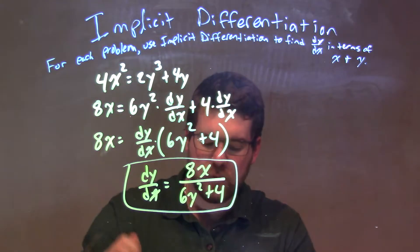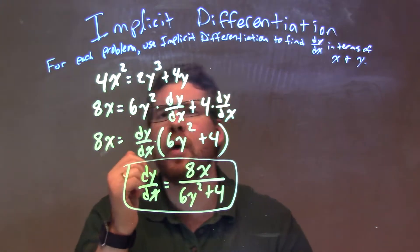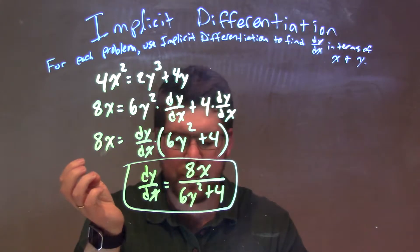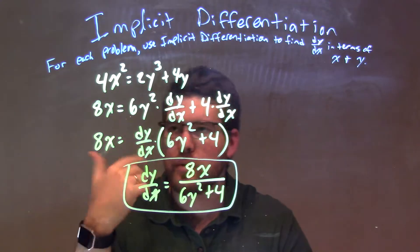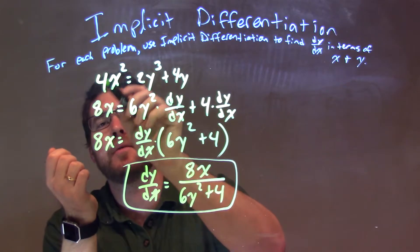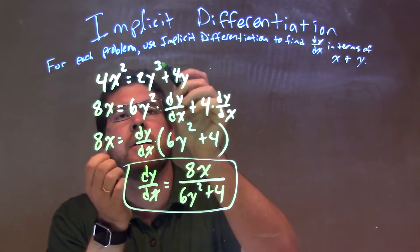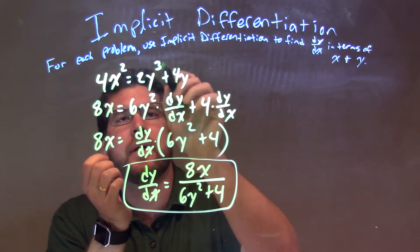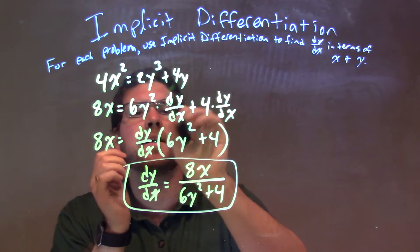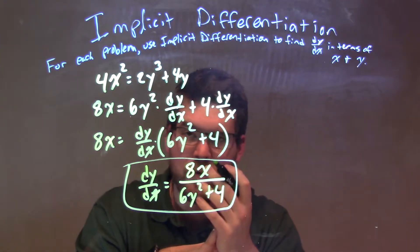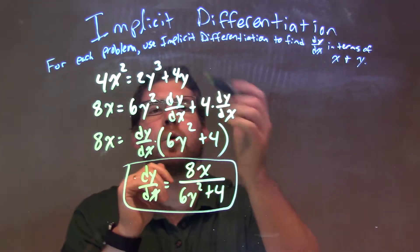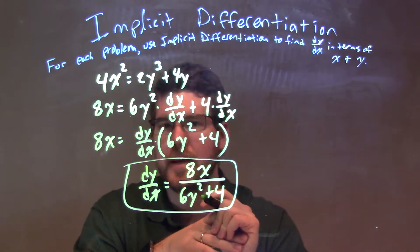So, let's recap. We're given 4x squared equals 2y to the third plus 4y. Well, I first derived that, 2 comes down times 4 is 8, x to the first, 3 times 2 is 6, y squared, times dy/dx, which is the derivative of y, plus the derivative of 4y is 4 dy/dx.